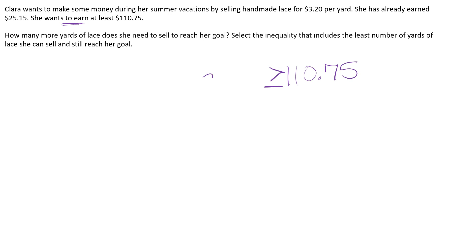She's already earned $25.15, and she's selling lace for $3.20 per yard. Anytime you see per yard, per minute, per mile — whatever it may be — that's usually an indicator that it will be multiplied by the variable. That is your constant of proportionality multiplied by that variable.